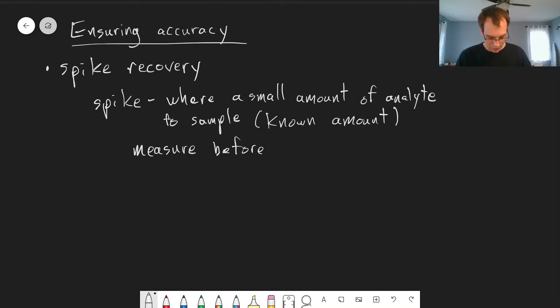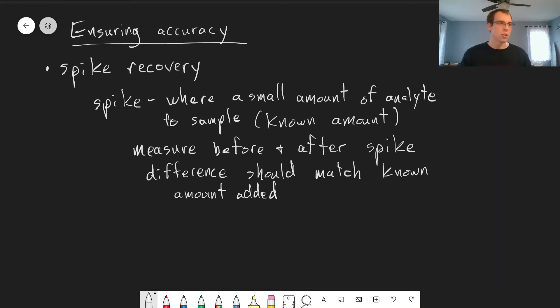So you measure the before and after the spike. And the difference in signals should match the amount of analyte you added. So you can determine how much you added to it and make sure that matches what you know that you added to it. So this is often written in terms of a percentage, and your ideal here is that you get a 100% spike recovery.